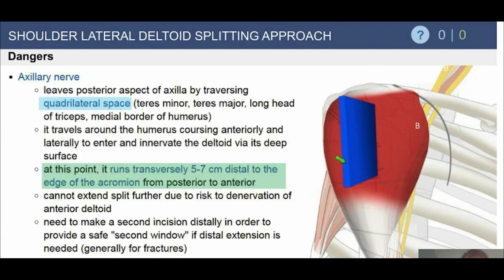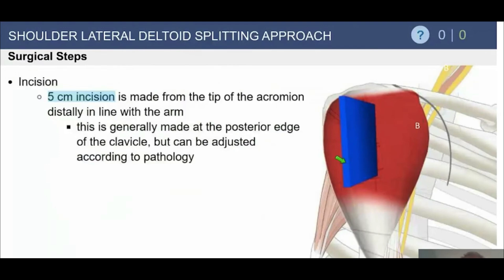There's no true internervous plane since we're splitting the deltoid. The axillary nerve is always a concern — it runs transversely five to seven centimeters from the acromion, but depending on patient size, could be as close as three to five centimeters, so don't take that for granted. Trauma surgeons like to make a second window for indirect reduction and ORIF with a plate, but most shoulder surgeons prefer the deltopectoral approach for proximal humerus fractures. We're also limited distally because the axillary nerve and the deltoid has been split in line with its fibers, with no great extension option.